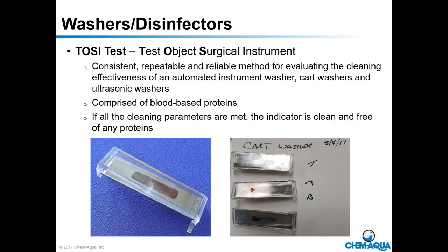The OC test is comprised of a blood-based protein. On the left you can see a uniform protein representing blood. Here are three that have gone through cycles and failed — each did not remove all protein and did not come out as shiny stainless steel. It's a reliable indicator to determine if the washer-disinfector is working well.